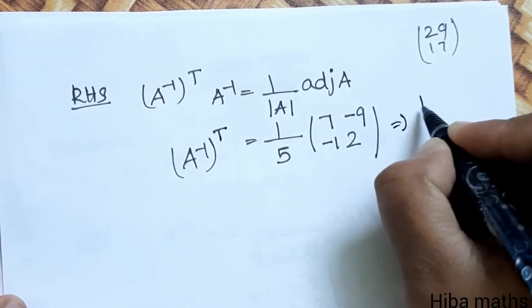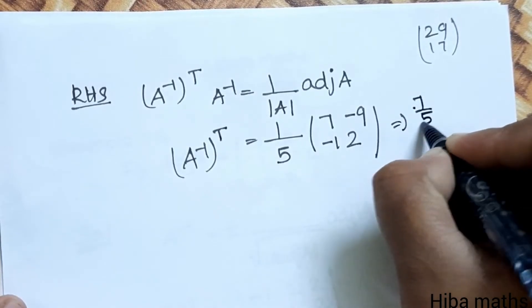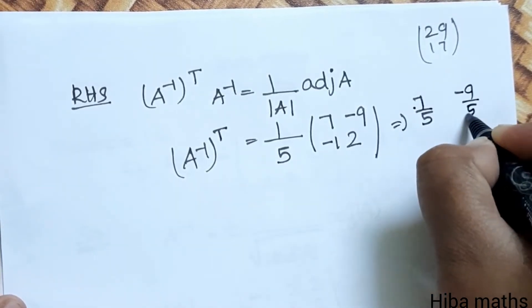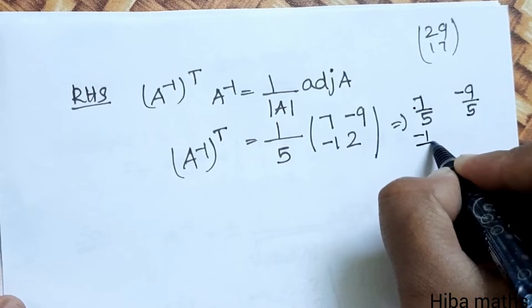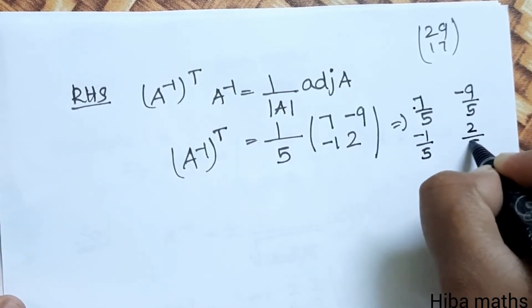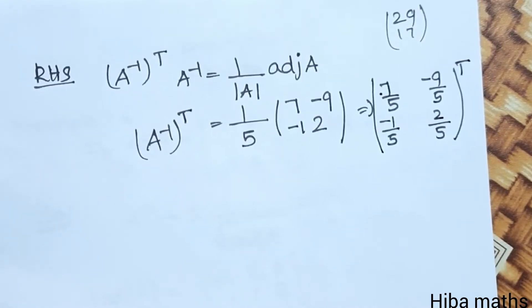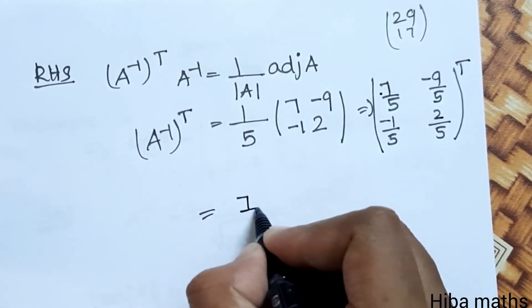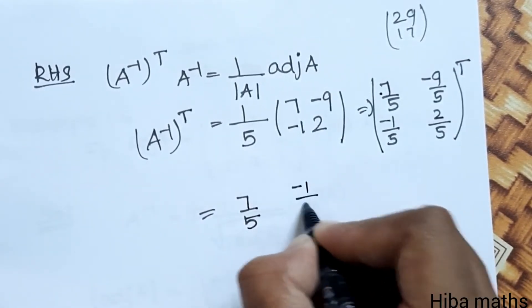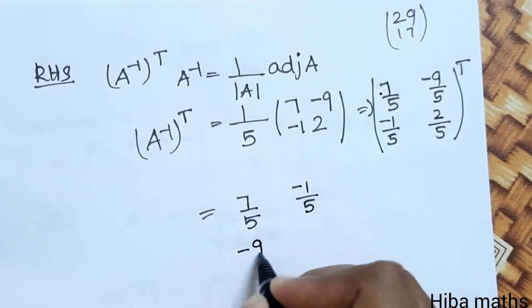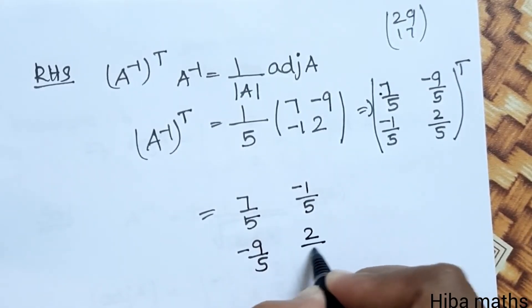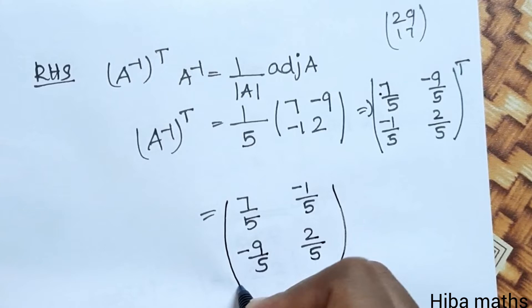A inverse transpose: 1 by 5 inside, so 7 by 5, minus 9 by 5, minus 1 by 5, 2 by 5. Now take the transpose. In a simple term it's easy to do. So 7 by 5, minus 1 by 5, minus 9 by 5, 2 by 5. Now the inverse is right. To do A transpose.